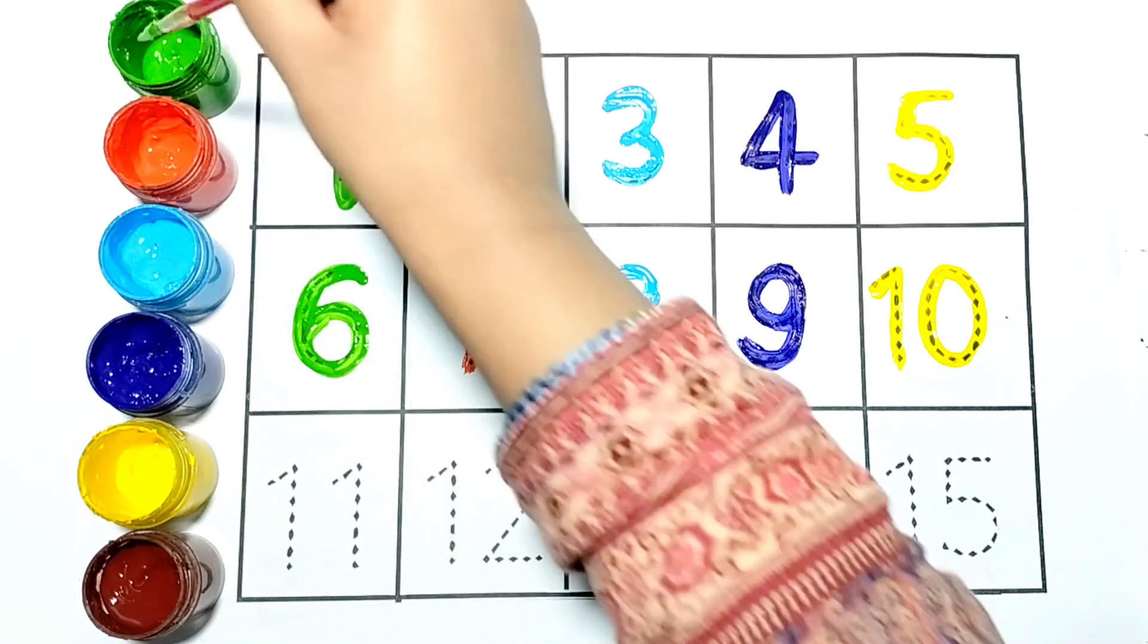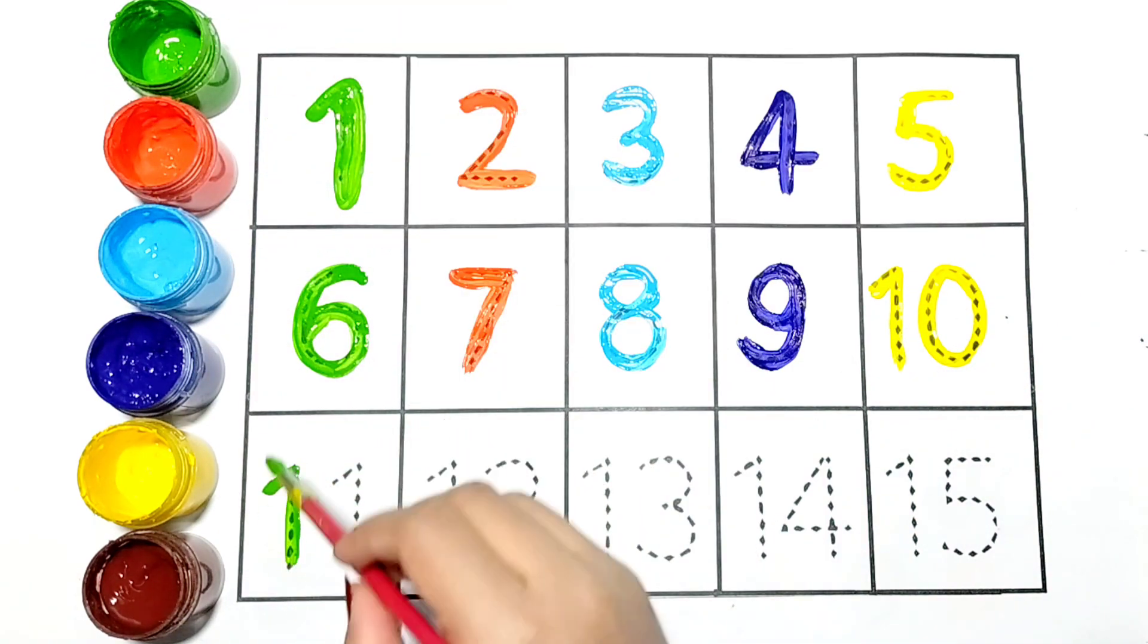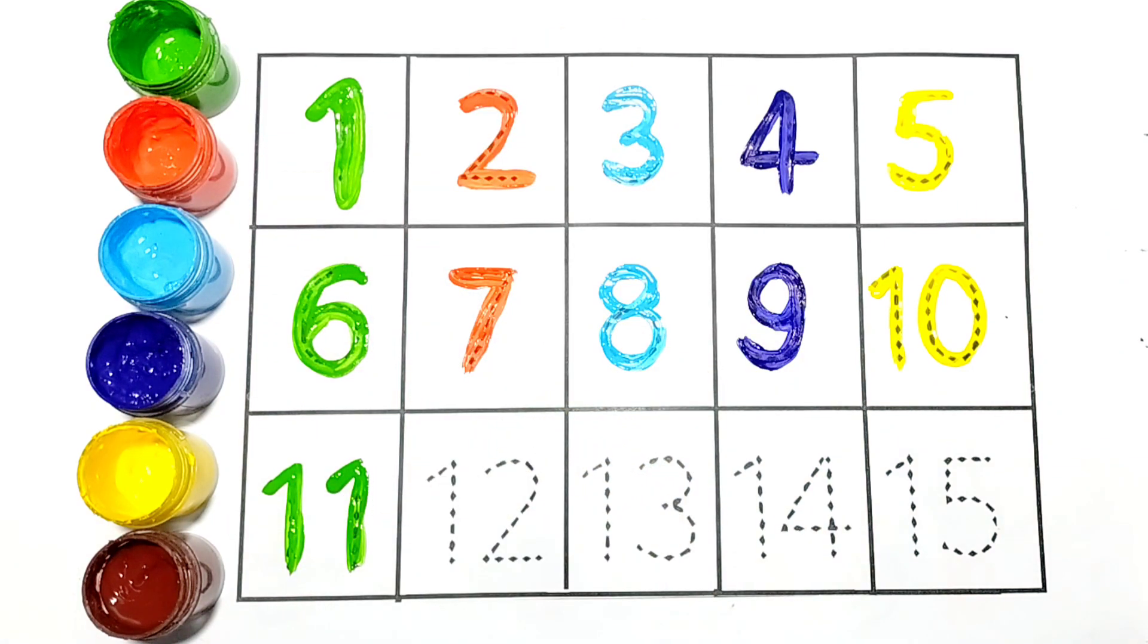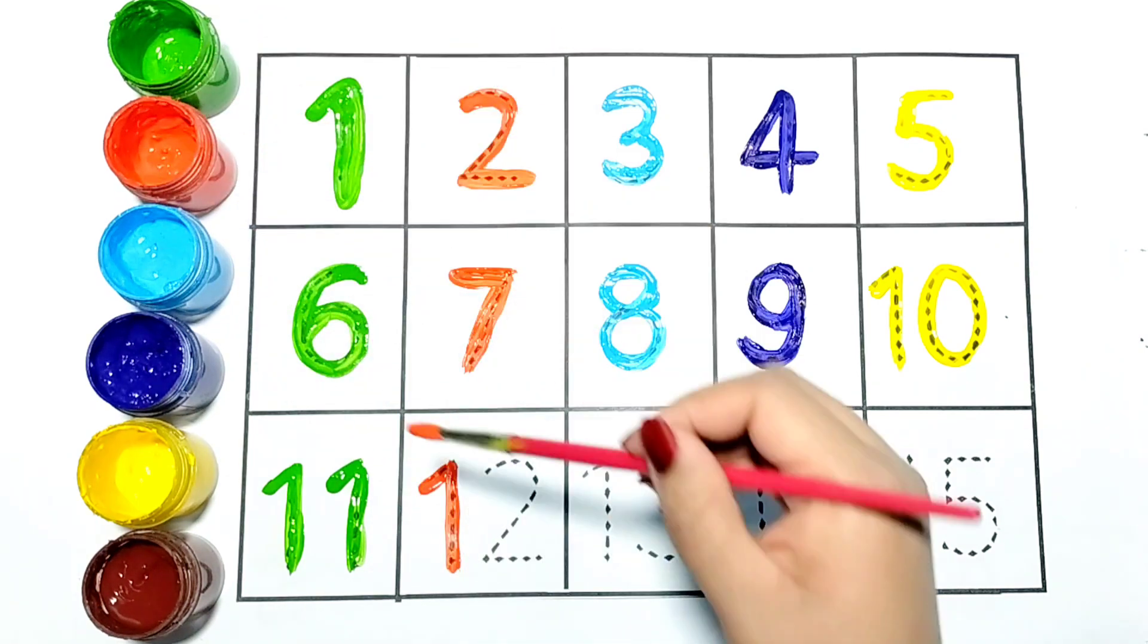Now I am writing 11. It is green in color. Let's write number 12. It is in orange color.